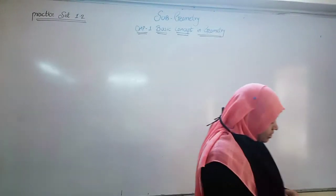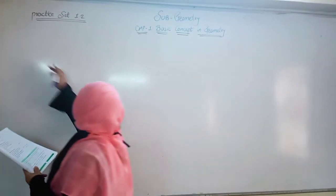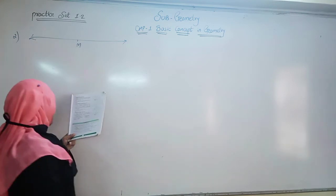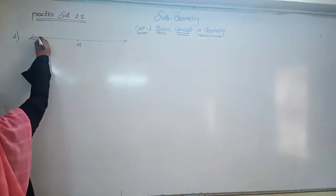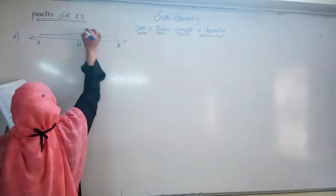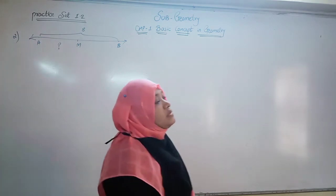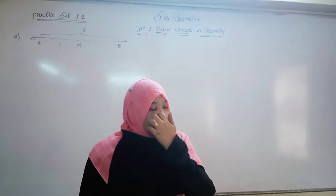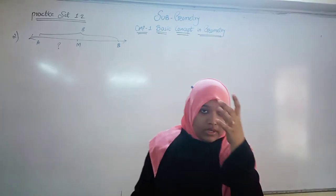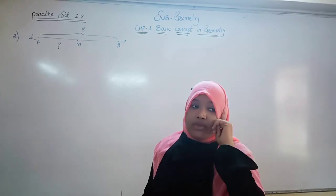Question number 2: Point M is the midpoint of Segment AB. If the length of Segment AB is 8, find the length of AM. I am making a number line for you. Remember: when a midpoint is given, it means the midpoint divides the line segment into two equal parts.